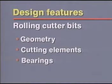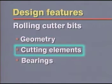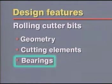The type of cutting action that prevails in a rolling cutter bit is determined by bit geometry, cutting elements, and bearing types.